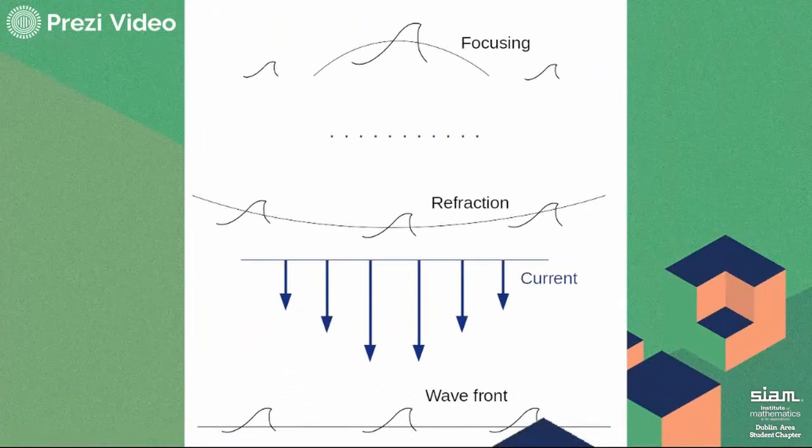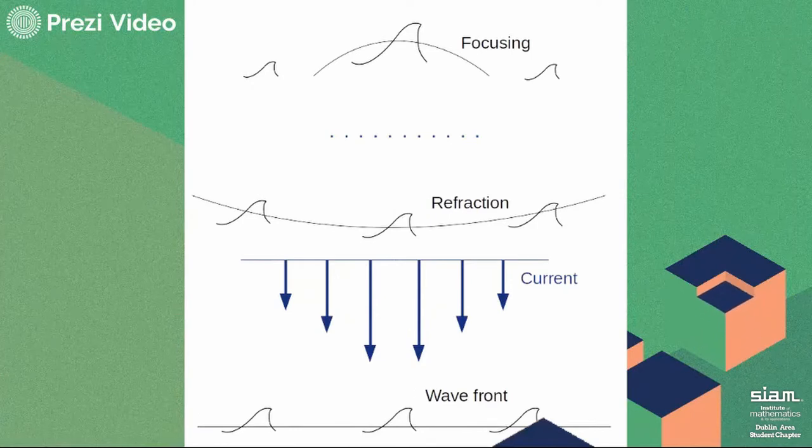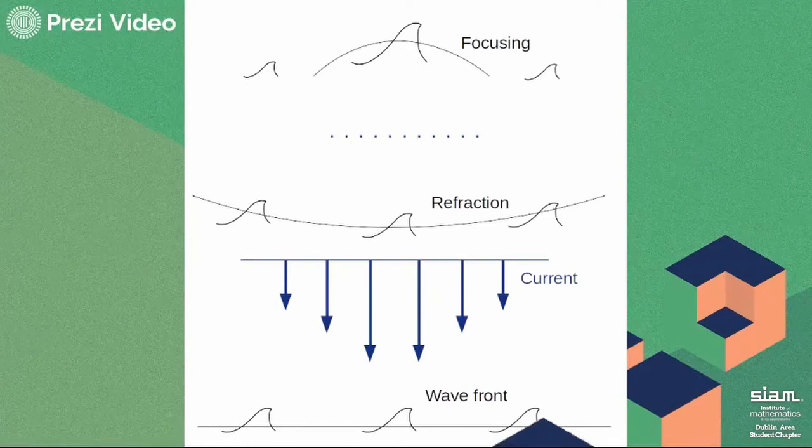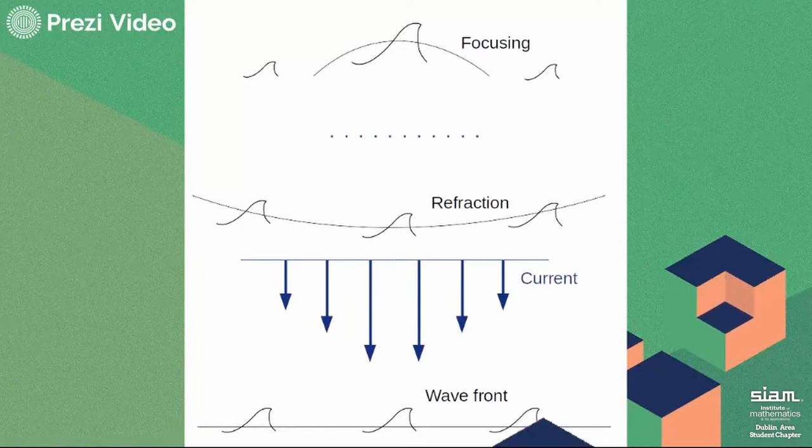Now the other way around: currents can also affect the propagation of waves. The most noticeable effect is the refraction of waves by the current. This time, let's imagine that a wavefront is propagating against a current, like shown in the figure there. The wavefront at the bottom will slow down because of the adverse current.